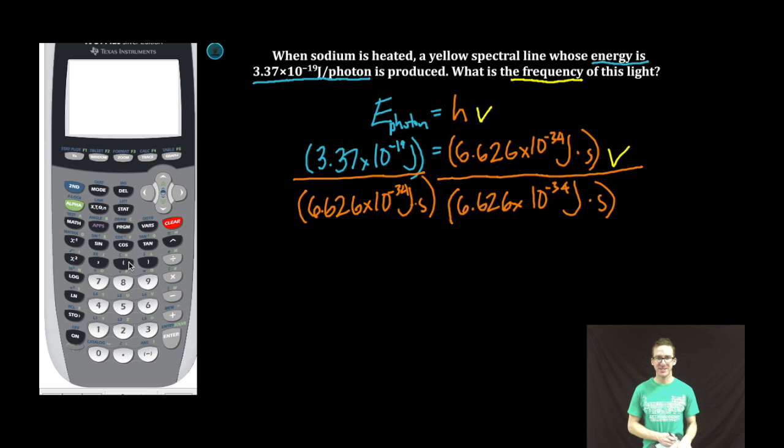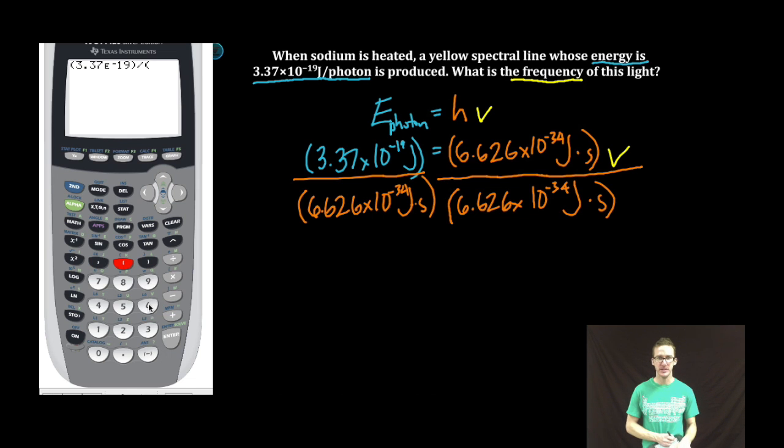Quick jump to my calculator. Parentheses 3.37, second E, negative 19, close parentheses, divide by new parentheses 6.626, second E, negative 34, close parentheses, enter.